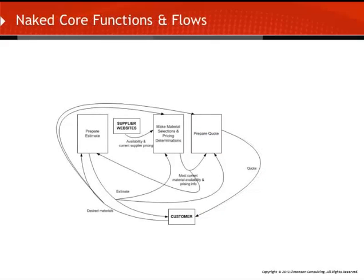We are now left with just our naked core functions and flows. Our core functions are: prepare estimate, make material selections and pricing determinations, and prepare quote. We now ask the gallery if this is essentially what they are trying to accomplish — do you want to do anything differently or new in terms of your core functions and flows? Or is the goal to support these core functions and flows in the most efficient and effective way? We ask them to imagine these functions just happen all at once without any time delays. After some thought, the gallery owner tells us that the only reason to offer an estimate to a customer is because the quote takes time to put together — there is no reason to provide an estimate if a quote can be provided right away.